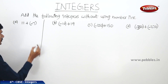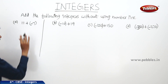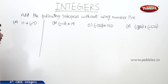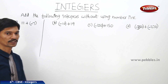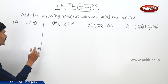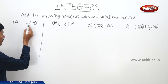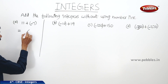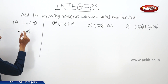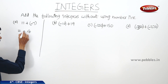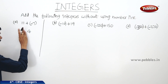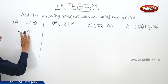Let us take the first question: 11 plus (-7). Here a positive integer and a negative integer are added. We subtract the smaller number from the bigger number: 11 minus 7 is 4, and since 11 has the plus sign, the answer is +4, or simply 4.